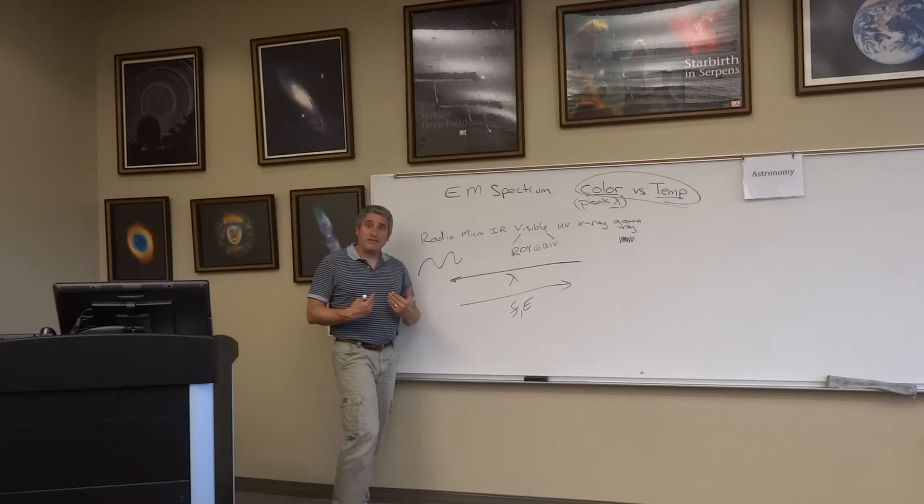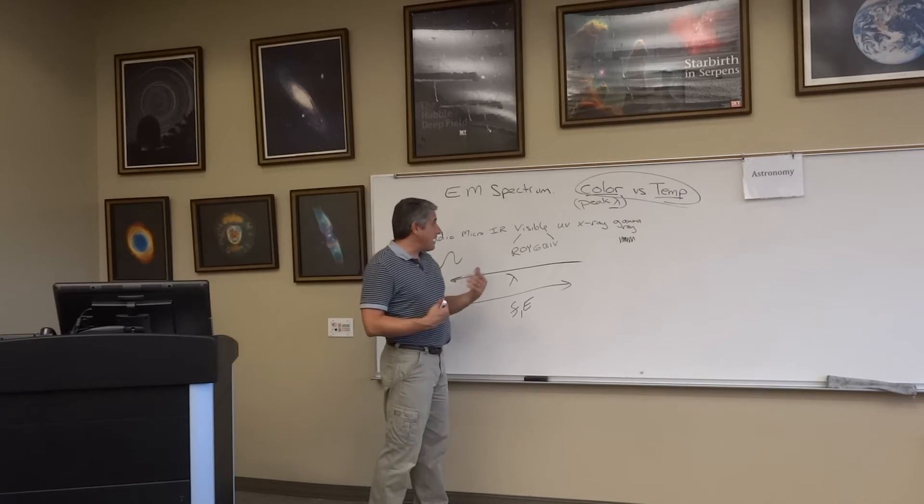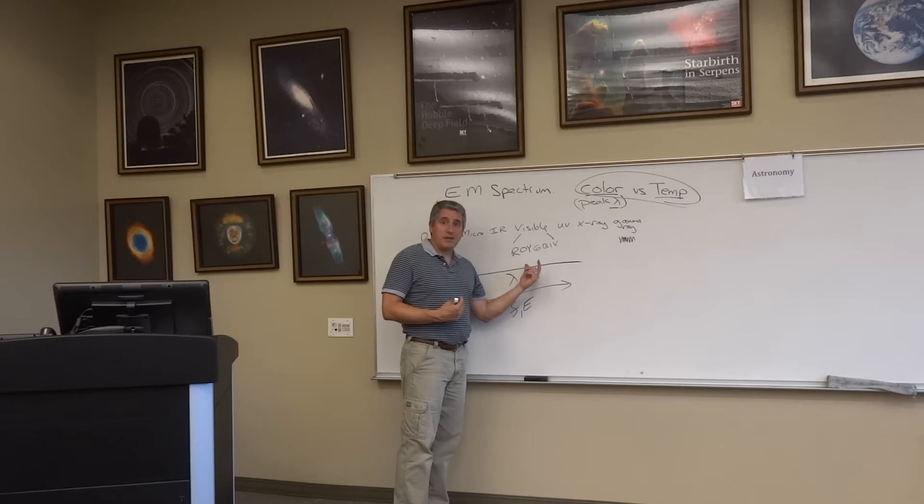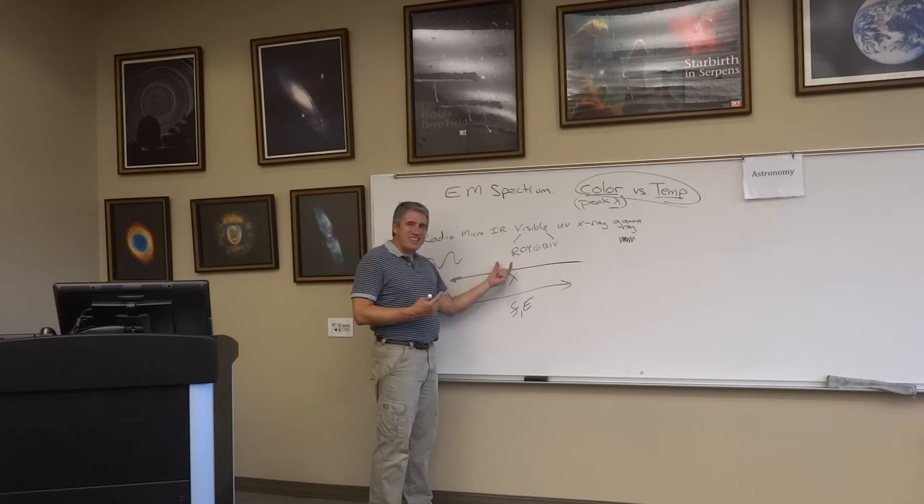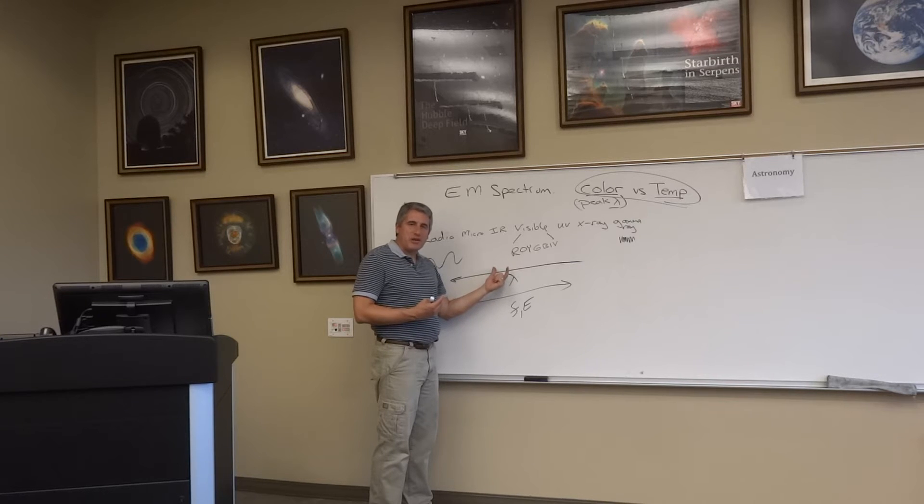You and I produce infrared light. Are we as hot as the sun that's producing visible light? Not by a long shot. We're cooler than the sun, therefore our peak wavelength is down in the infrared part of the spectrum.